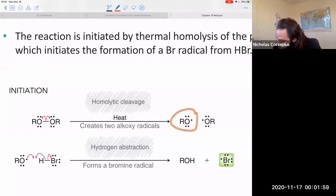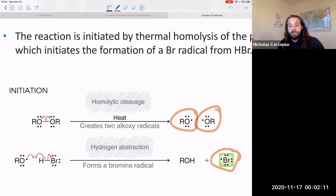It's an initiation step. So we start out with no radicals, and we've generated two new ones. And then this will go and react with HBr in order to eventually form your bromine radical. So what we see is that there is a hydrogen abstraction from the HBr by the peroxide radical.